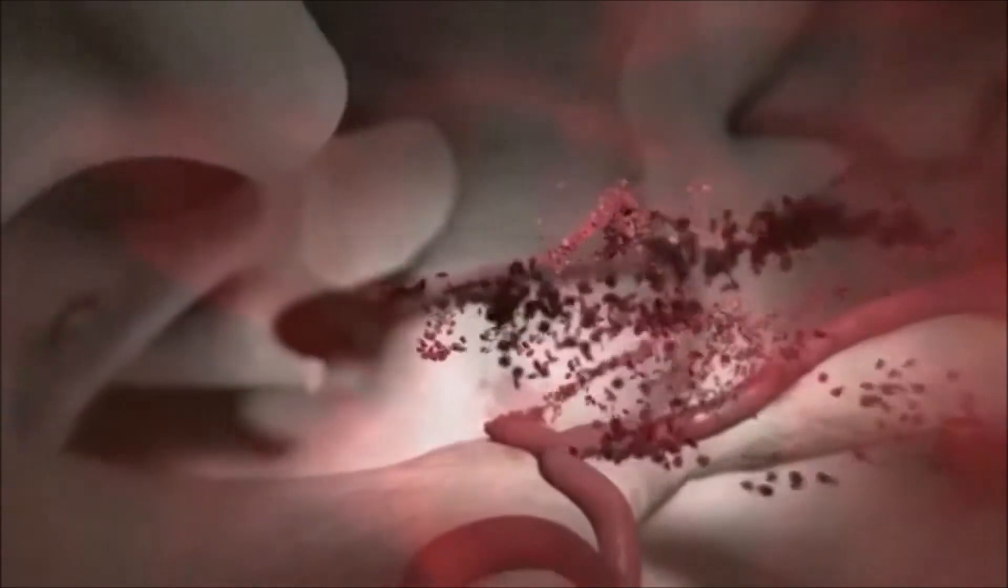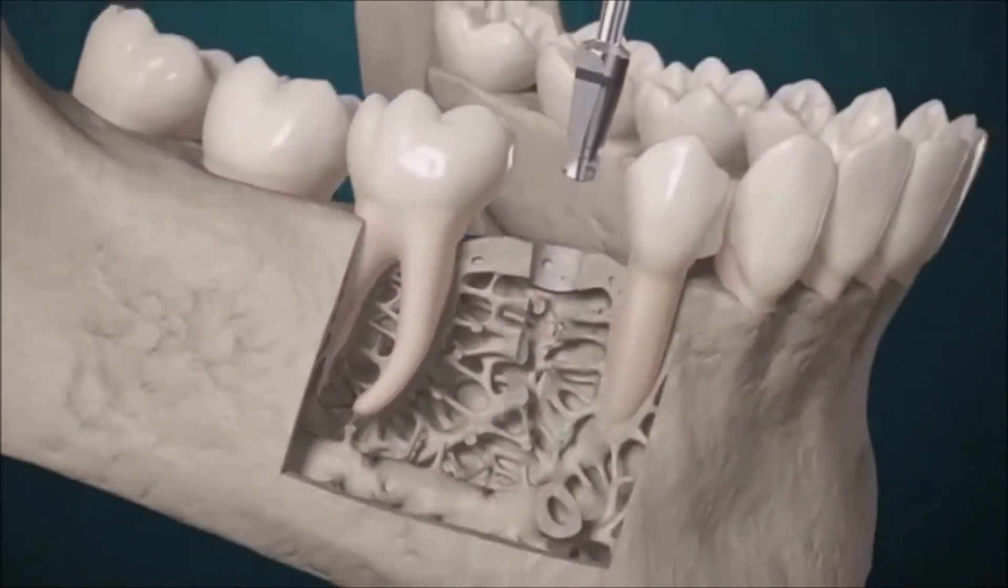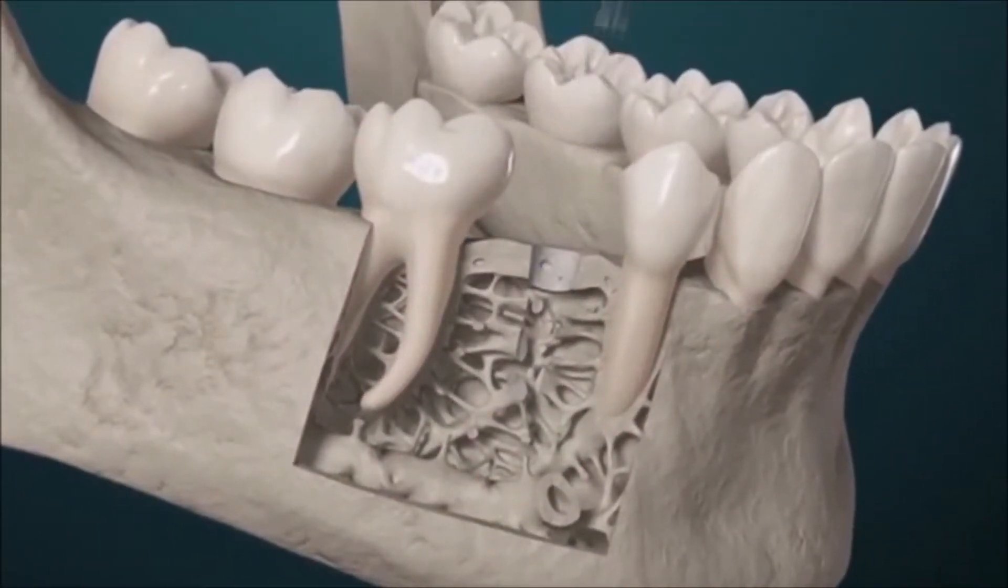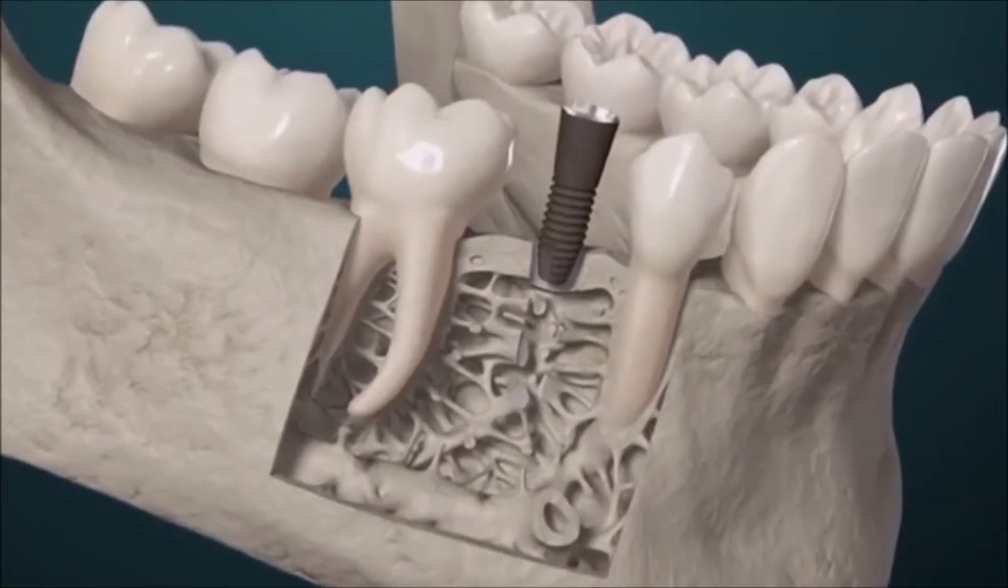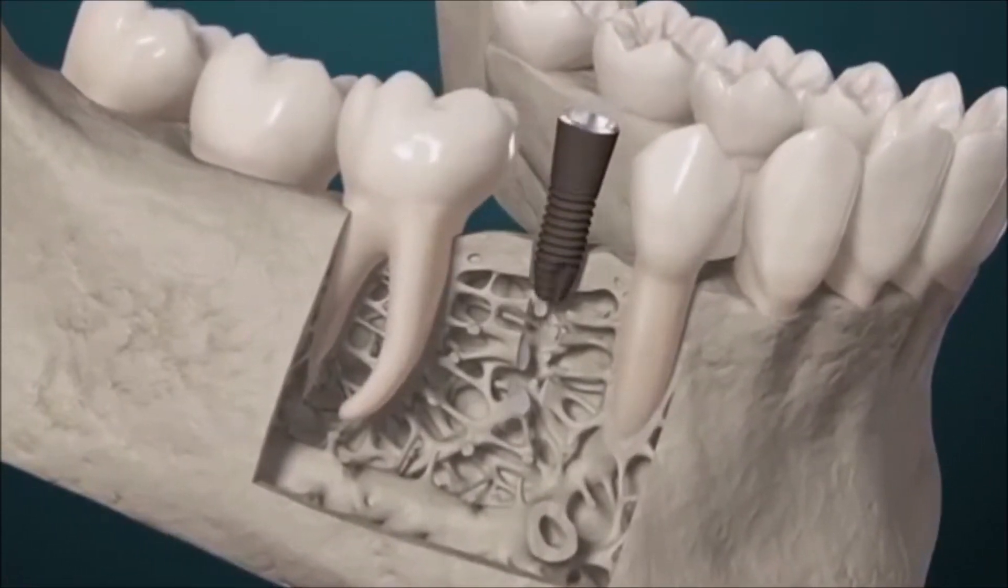The titanium implant is inserted where the tooth was previously lost. At first, the only force holding the implant in place is mechanical friction. This is called primary implant stability.